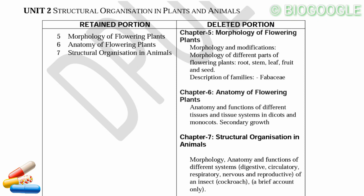Next, Structural Organization in Animals: morphology, anatomy, and functions of different systems — digestive, circulatory, nervous, and reproductive systems of insects and cockroach. The detailed type study of cockroach is deleted. Earthworm and frog are retained, but the tissue detail — epithelial tissue — is there.